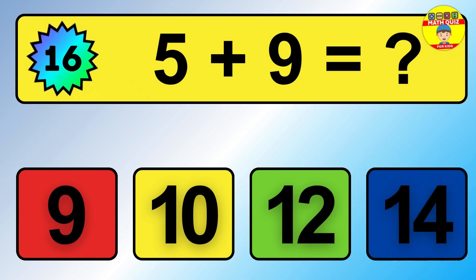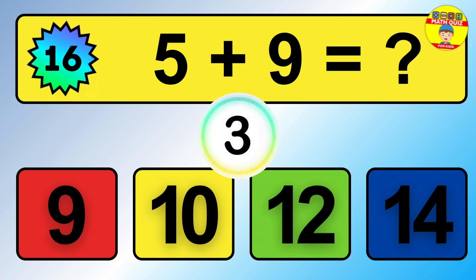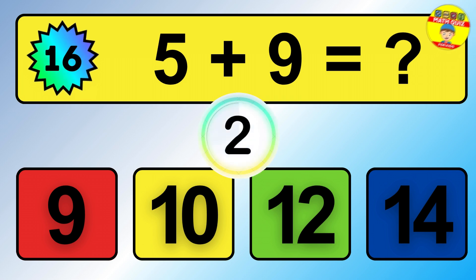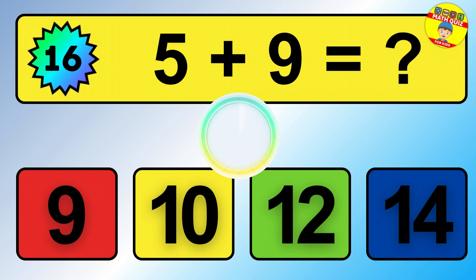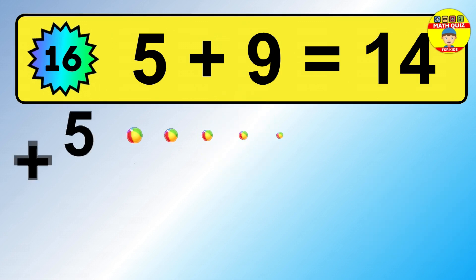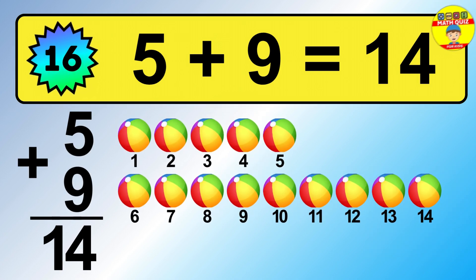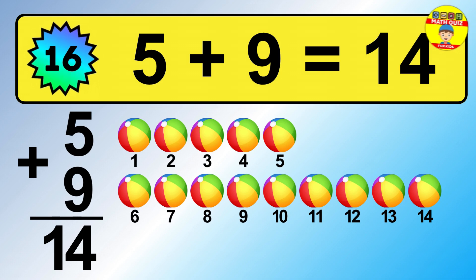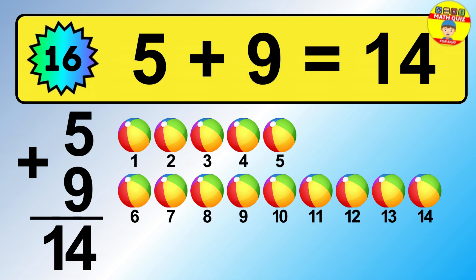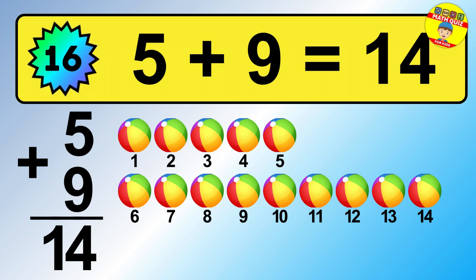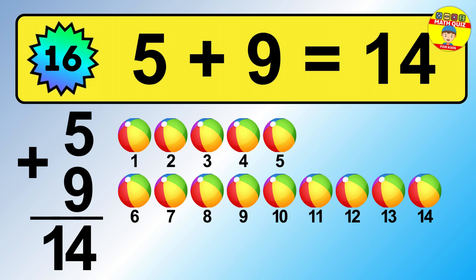Question 16. 5 plus 9 equals what? So the answer is 5 plus 9 is 14. Let's count it: 1, 2, 3, 4, 5, 6, 7, 8, 9, 10, 11, 12, 13, 14.